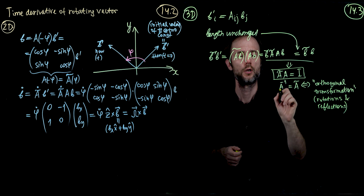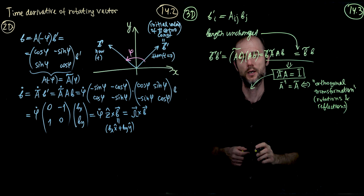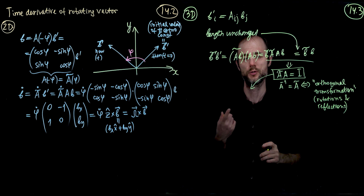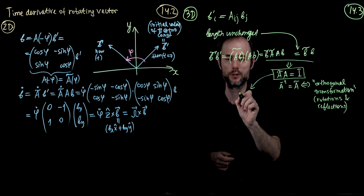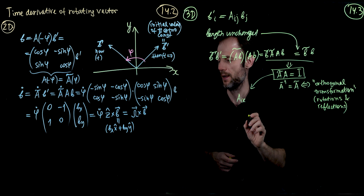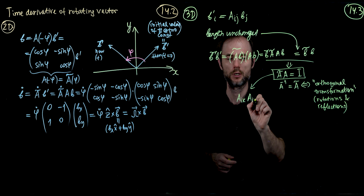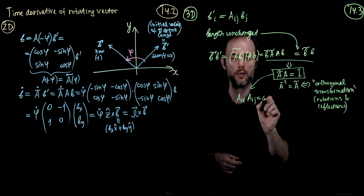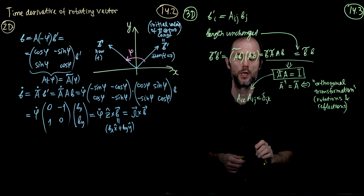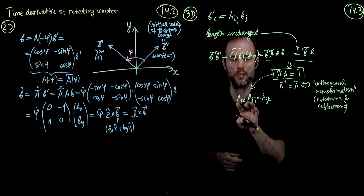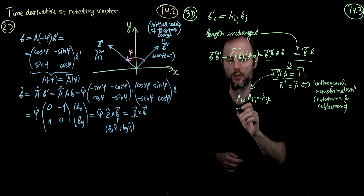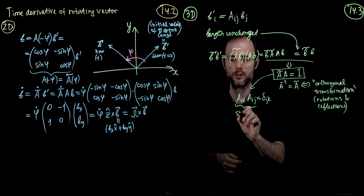Hello and welcome to the last part of lecture 14, part 14.3. Now we would like to figure out how rotations work in 3D. We can write exactly the same thing: B prime of i equals Aij times Bj. One thing we will require is that during the rotation, the length of a vector is unchanged.